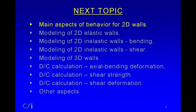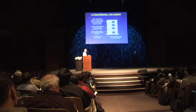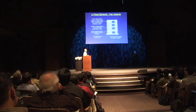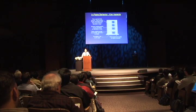We're talking about in-plane behavior since this is 2D, and we'll talk about out-of-plane behavior later. We have piers, coupling beams, maybe some deep coupling panels. This is a reasonable interpretation of the behavior: even though this is a pretty fat pier, they act pretty much like columns, and plane sections remain essentially plane. That doesn't mean they're necessarily governed by bending — they may be governed by bending or by shear. The key thing is that it's really not unreasonable to assume plane sections remain plane.